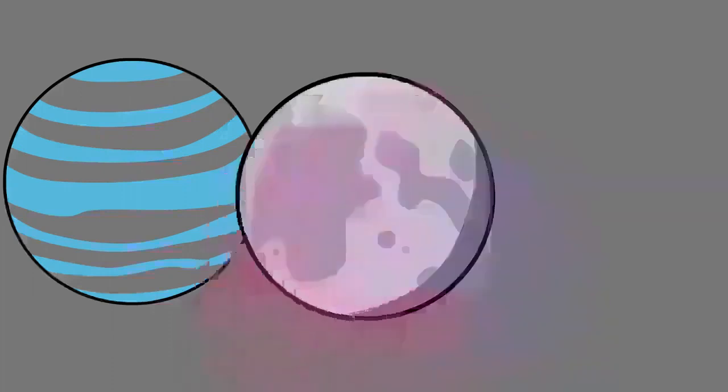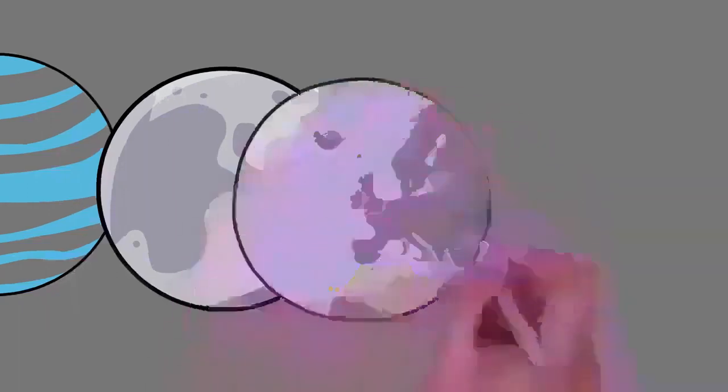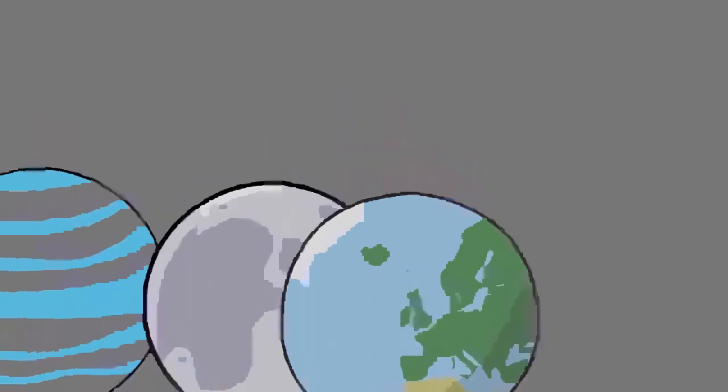Earth is the third planet from the Sun and the only astronomical object known to harbor life. This is enabled by Earth being a water world, the only one in the solar system sustaining liquid surface water. Almost all of Earth's water is contained in its global ocean, covering 70.8% of Earth's surface.